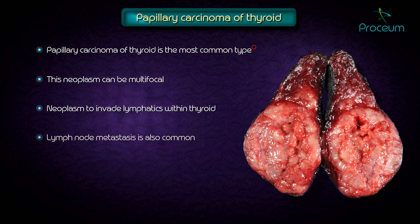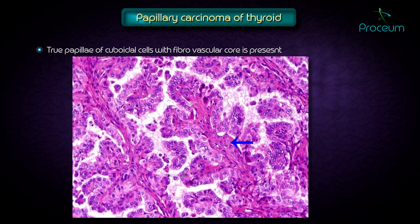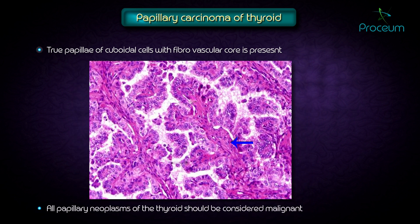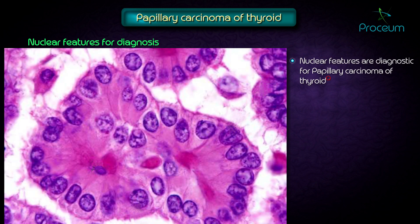Lymph node metastasis is extremely common and comprises about 75–80% of cases. True papillae of cuboidal cells with a fibrovascular core are seen. There is no such thing as a papillary adenoma — all papillary neoplasms of the thyroid should be considered malignant. The nuclear features are diagnostic for papillary carcinoma of the thyroid. The first is the orphan Annie nucleus — optically clear nuclei.